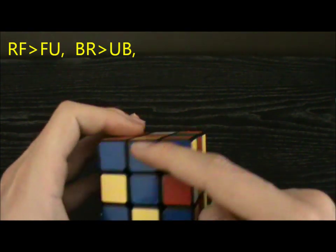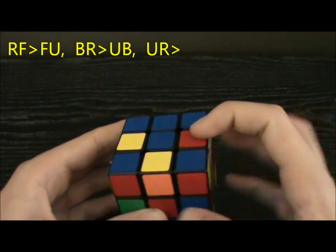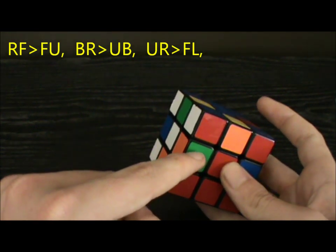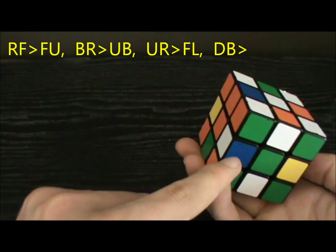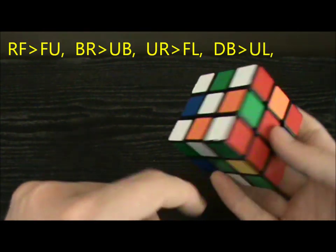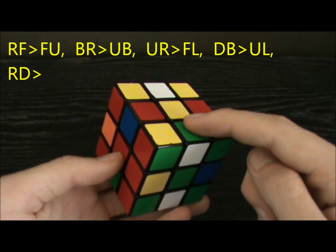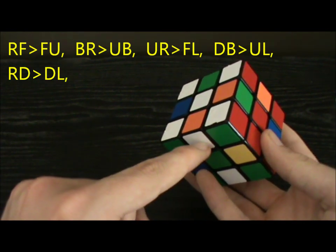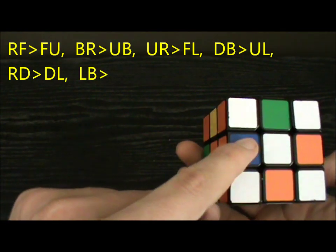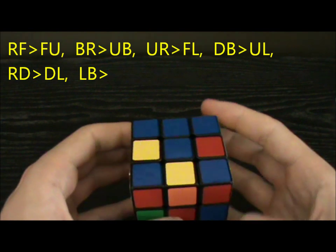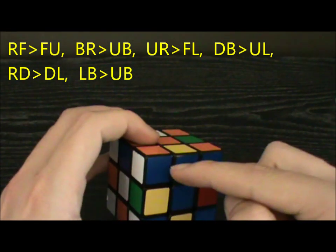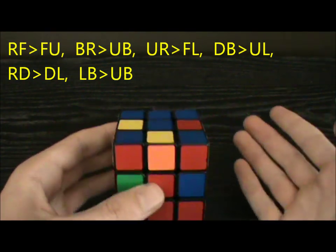Then that goes to UR, which goes to FL. Then that goes to DB, which goes to UL. Then to RD, then DL, then LB, and LB comes back to UB. So that's the memorization done.